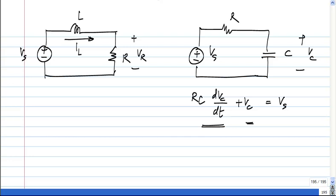Now, in this case what do we have? Vs minus Il times R, which is the voltage across the inductor, is L times dIl by dt.